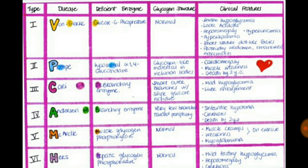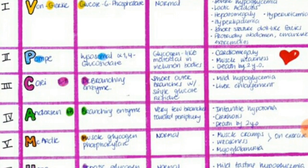Type 3 is Cori's disease. In types 3 and 4, the next alphabet helps remember the enzyme: C is followed by D, so Cori's has debranching enzyme deficiency. The glycogen structure shows short outer branches with single glucose residues. Features include mild hypoglycemia and liver enlargement. Remember: CD — Cori's is debranching enzyme, type 3.